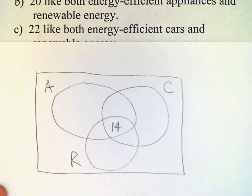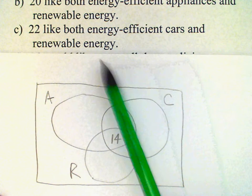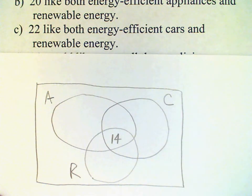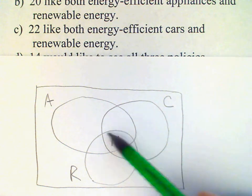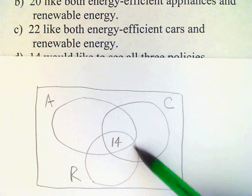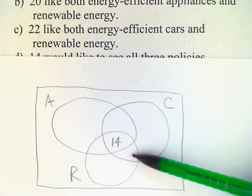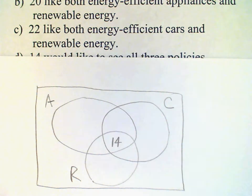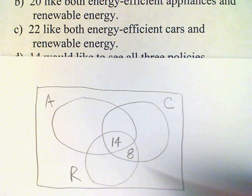Now let's look at the next item up on the list. It says 22 like both energy efficient cars and renewable energy. So that would be the intersection of those two sets, R and C. Now there are already 14 that are in this region here, and so that means this region here must have 22 minus 14 or 8 in there.